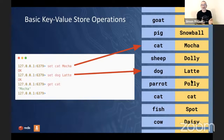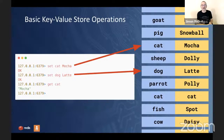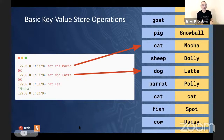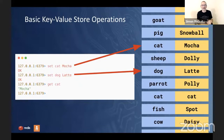Redis is a key-value data store. If you've looked at other key-value stores such as Memcached, we perform get and set operations. I can set a key called 'cat' to a value 'mocha' and a key called 'dog' to 'latte'. When I do 'get cat', I retrieve the value stored in that key and get 'mocha' back. Redis has a lot more than just this basic behavior — much more than table stakes.